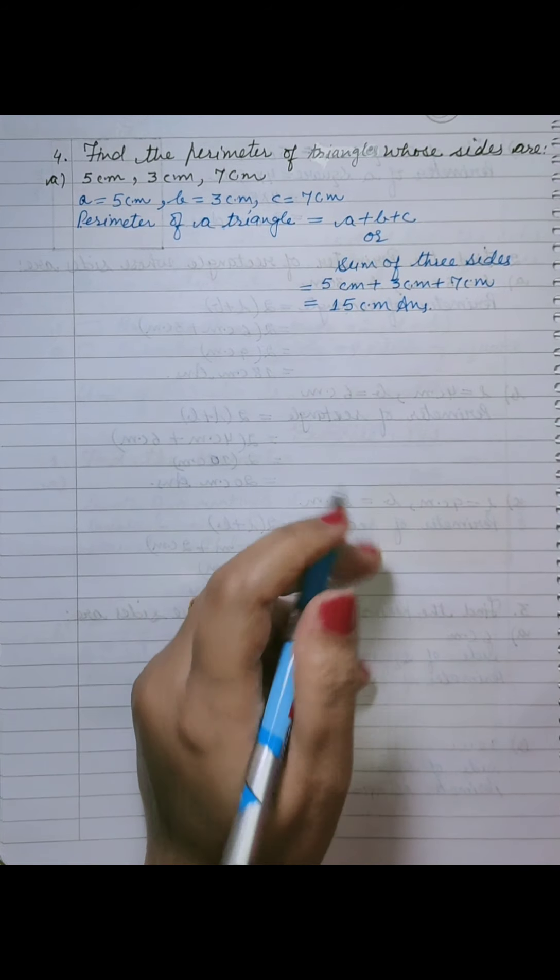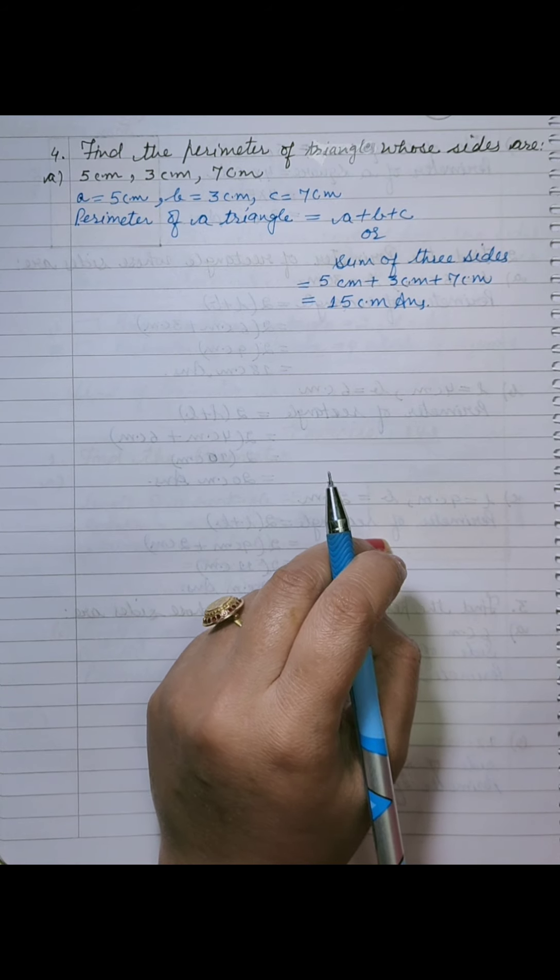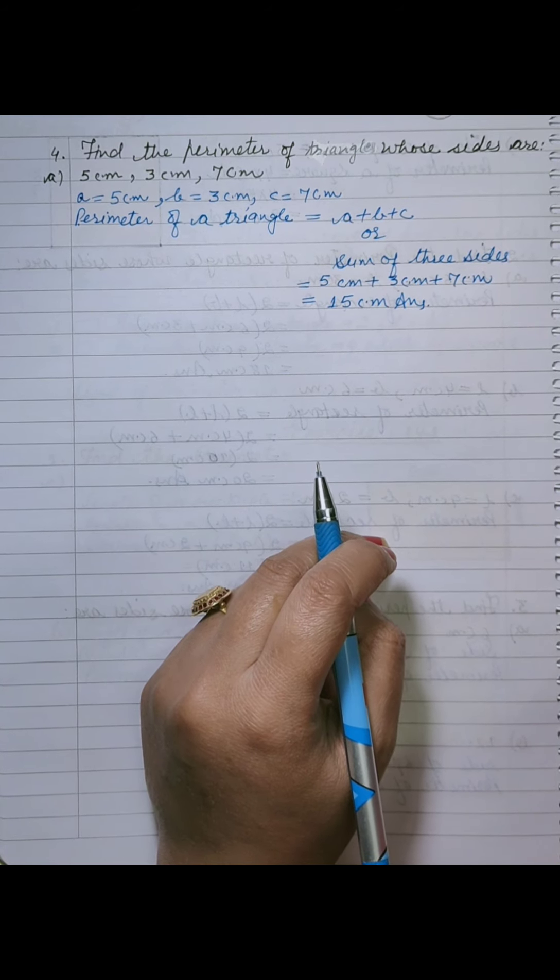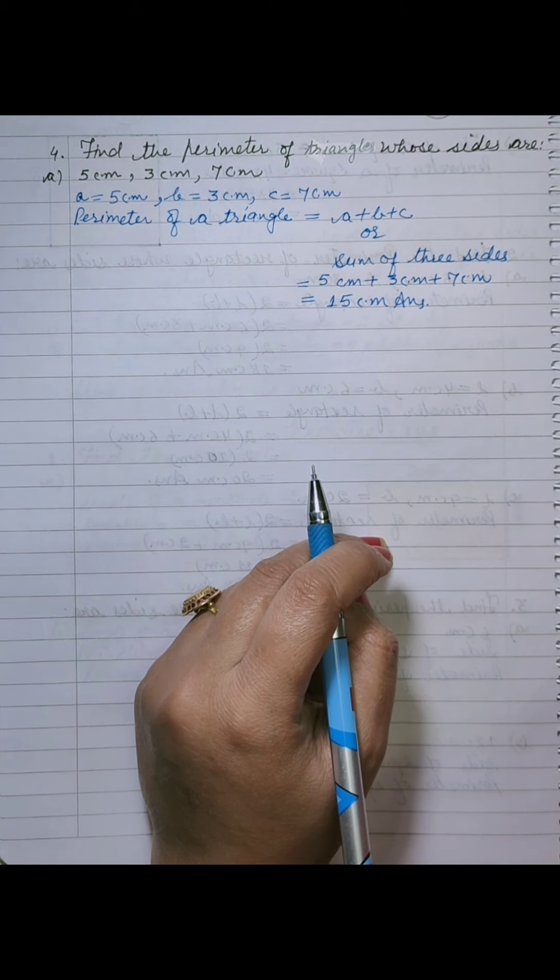Perimeter mein hi hota hai, ke jo bhi uski length banti hai, usko humne calculate karna hota hai. Rectangle ka bhi formula hai, square ka bhi formula hai, triangle ka bhi formula hai.